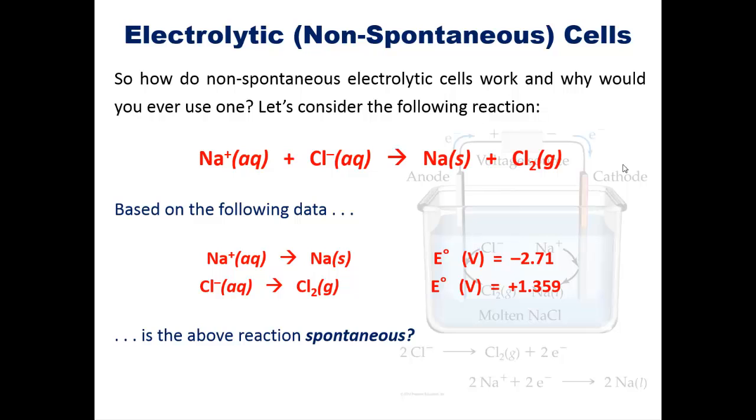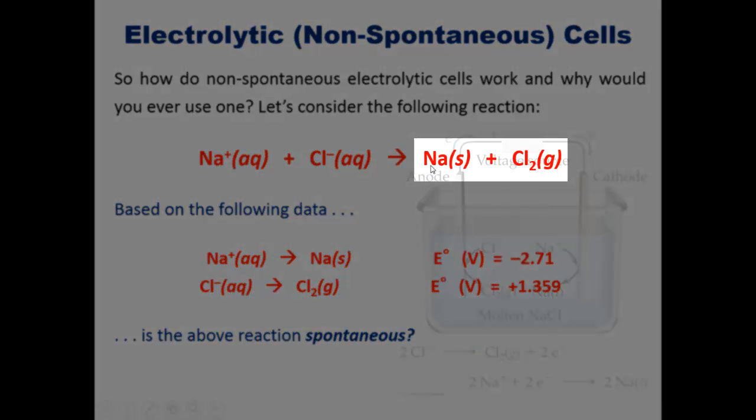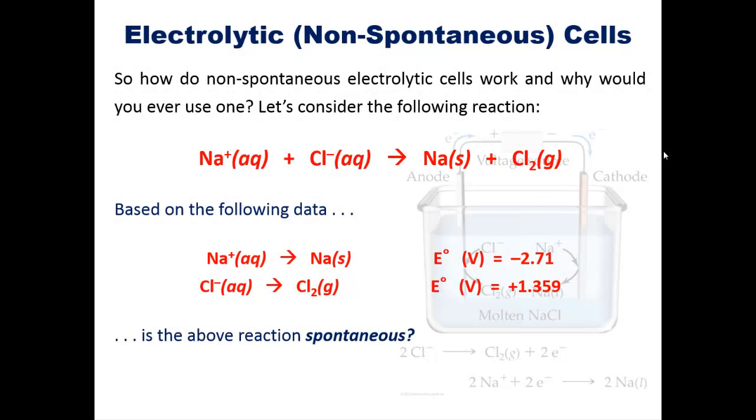The answer is simple. You do it in a circumstance where you want to manufacture sodium metal, that is sodium zero, or chlorine gas. In such a circumstance, you could easily get sodium cation, chloride anion from table salt and then push them in a way that costs energy uphill in the energetically disfavored direction to their parent elements. Because it's energetically disfavored, it is non-spontaneous. And in principle, this is how a non-spontaneous electrolytic cell works.